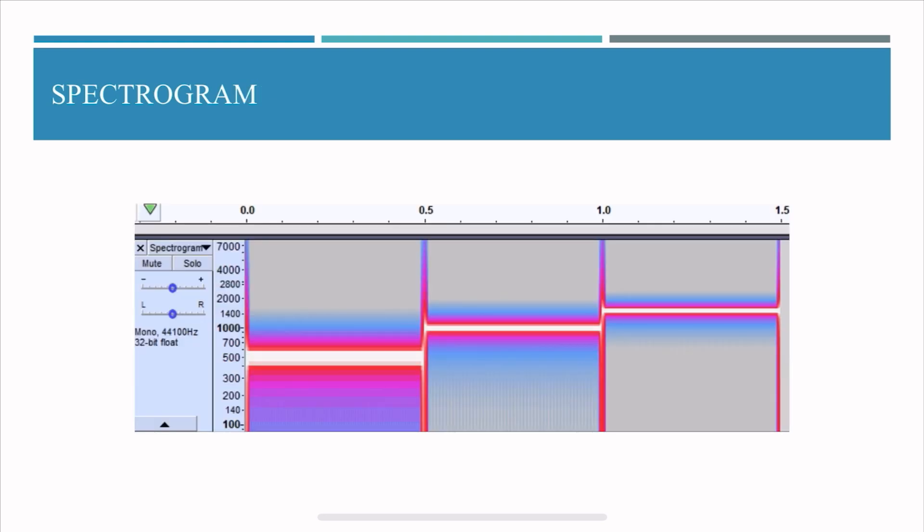If you look at the spectrogram you'll see something like this. It's pretty easy to see that okay 500 Hertz was present between 0 and 0.5 second and then 1 kilohertz is present between 0.5 and 1.0 second.